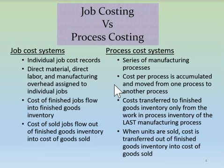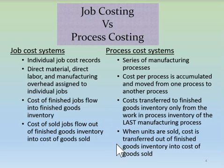The cost per process is accumulated as product moves from one process to the next. Once the final production process is complete, the finished products are transferred to the packaging process. When the finished product is packaged and put into various boxes and bags using additional labor and equipment, the boxed and bagged products are transferred into finished goods inventory, where they remain until sold. In process costing, costs are transferred into finished goods inventory only from the work in process inventory of the last manufacturing process, such as packaging, and those transferred costs include all costs assigned from every prior process.